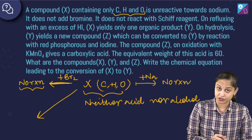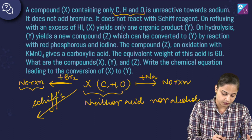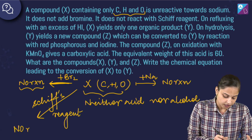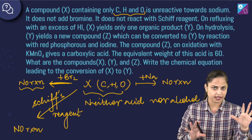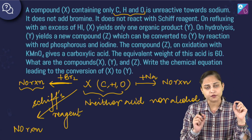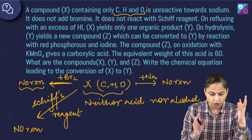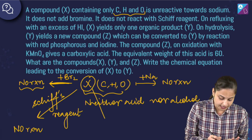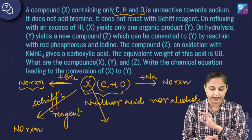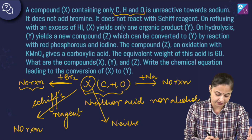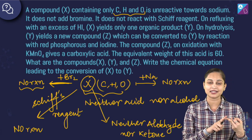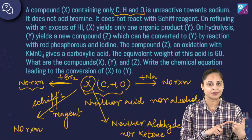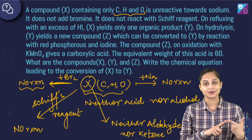It does not react with Schiff's reagent — no reaction. If it's not showing any reaction with Schiff's reagent, that means it does not have an aldehyde present. Schiff's reagent is used to check for the presence of aldehydes and ketones. So compound X can't be an aldehyde or ketone. Not acid, not alcohol, not aldehyde, not ketone — and it contains carbon, hydrogen and oxygen — so we are left with only ether. It can be an ether.